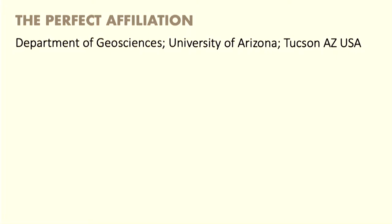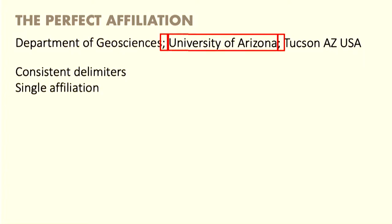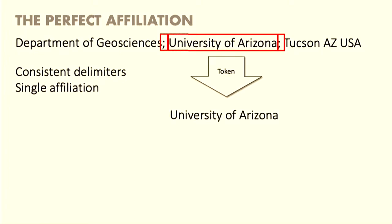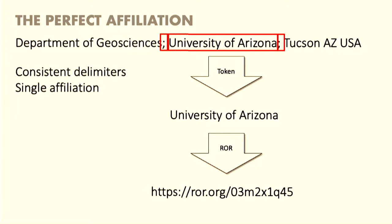This is what a perfect affiliation string looks like. People teaching scientists how to do things effectively with their publications should work on writing simple affiliation strings from which we can extract names of universities. This is a good one because it has consistent delimiters — semicolons in this case — and there's a single affiliation delimited by those delimiters. We can obviously recognize that pretty easily and turn it into a ROR. So this is a very simple project.